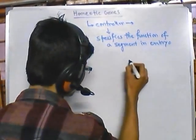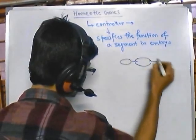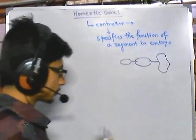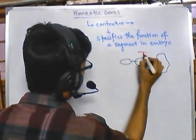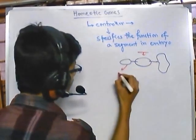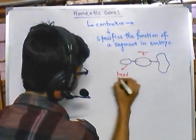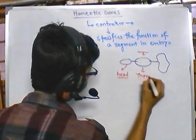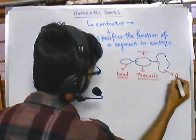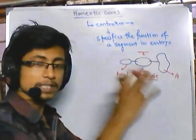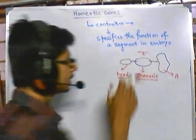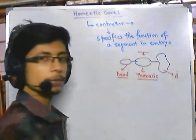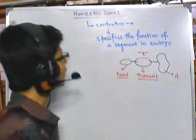During embryogenesis, there are many segments, especially during gastrulation. Let's say these are the different segments — genes present in the segmentation specify that this part is going to be the head, this part is going to be the thoracic region, this part is going to be the abdomen, and so on. That specificity — that this is the part responsible to be the head, this is the part to form the thoracic region — is provided by homeotic genes.